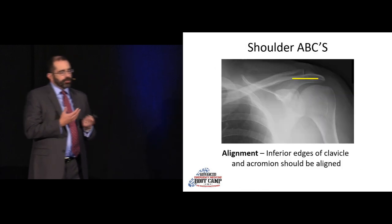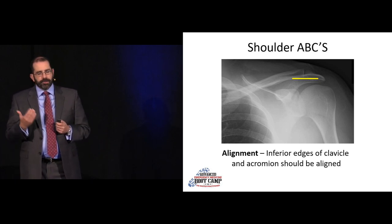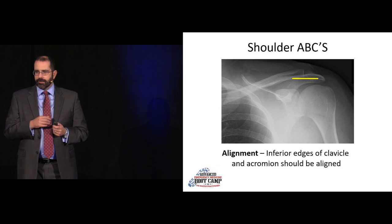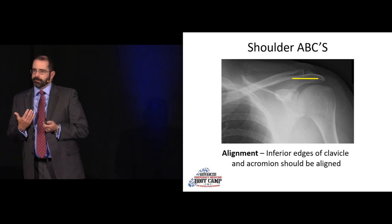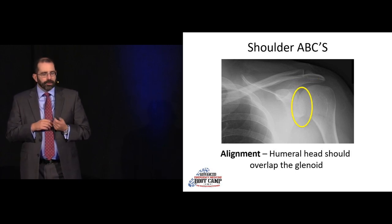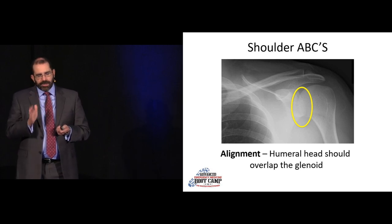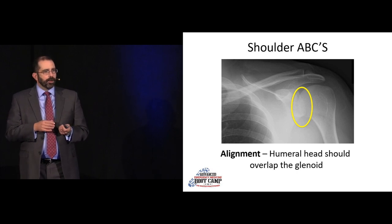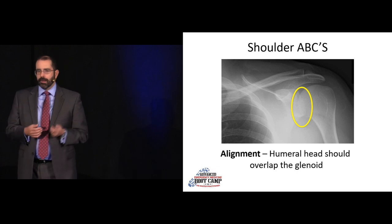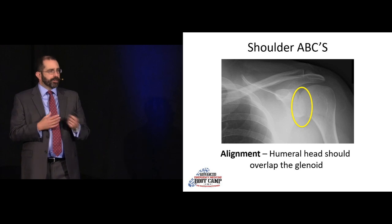For the shoulder, in terms of alignment, the inferior border of the clavicle should line up with the inferior border of the acromion — if they're displaced, that's an AC separation. Also, the humeral head should overlap the glenoid slightly — the rim sign. If you're seeing clear space in an adult, you need to be worried about a shoulder dislocation, classically a posterior shoulder dislocation, which is always on the top-ten orthopedic pitfalls list because it can be subtle.